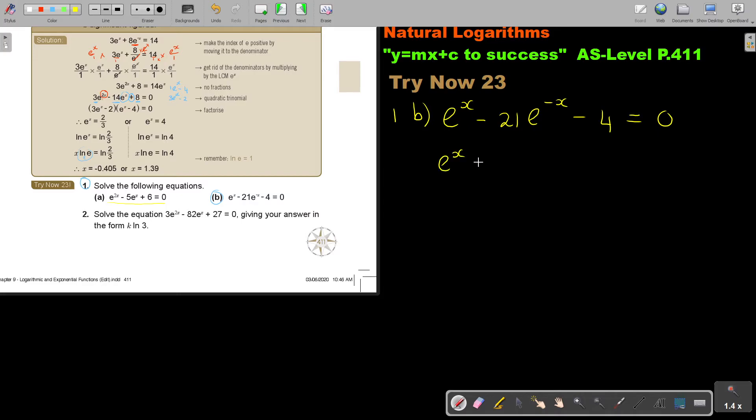So, it's going to be e to the power x minus 21, e to the power x minus 4 over 1 equals 0. And then, I multiply e to the power x, multiply e to the power x, multiply e to the power x, and actually there also, all the terms.